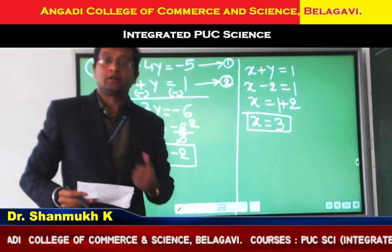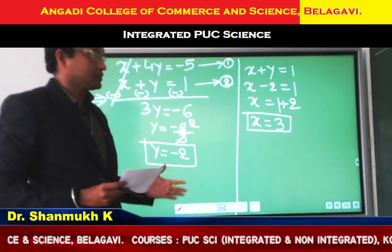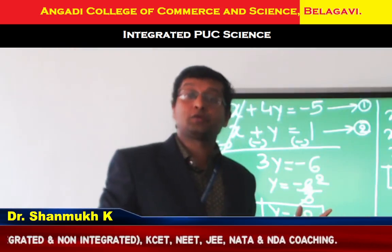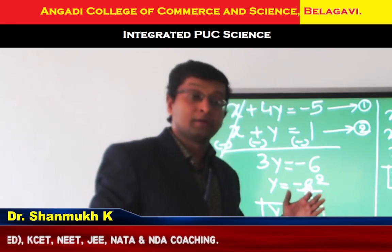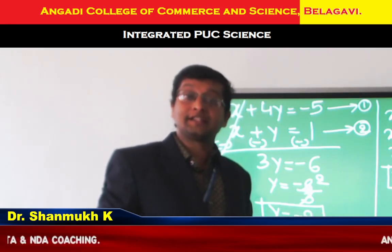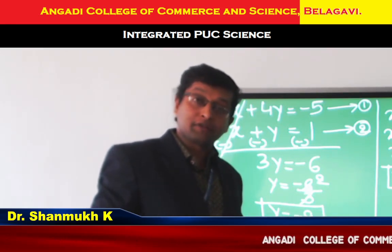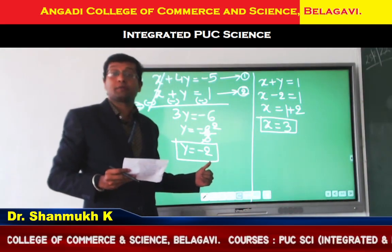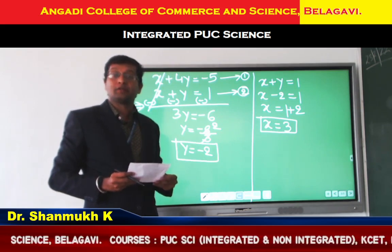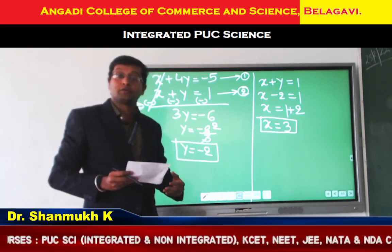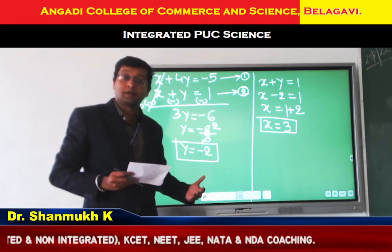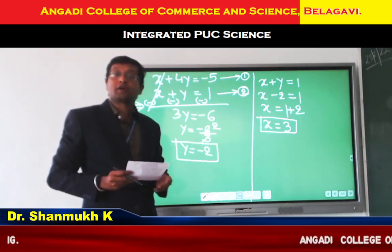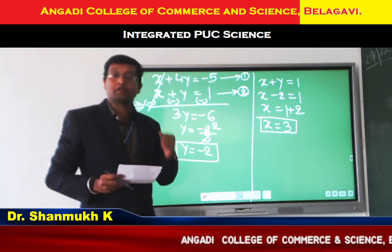Dear students, we have discussed 4 examples on the system of two linear equations with two unknowns. Further questions are there in the English book — you can refer and solve them. This is a very important 2-marks, very short question topic. In the next session, we will come up with one more concept and discuss the fixed questions. Thank you very much.